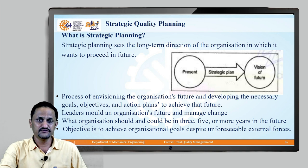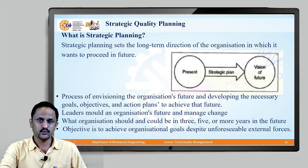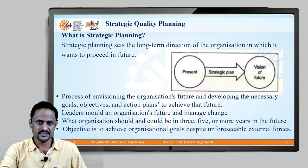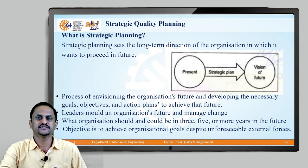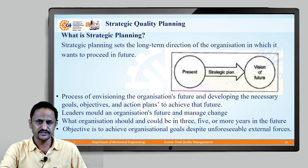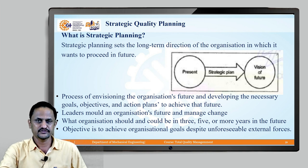Strategic planning is the process of envisioning the organization's future and developing the necessary goals, objectives, and required action plans to achieve these goals and objectives. Leaders are the key people who will mold an organization's future and manage the entire change under strategic planning. Strategic planning also helps to find out what the organization should and could do in the next 3, 5, or more years. The basic objective is to achieve organizational goals despite any unforeseeable external forces.